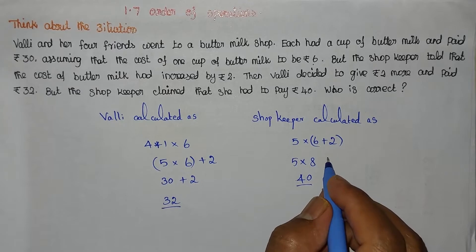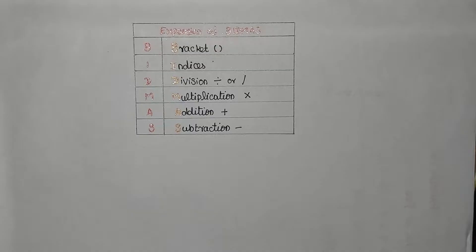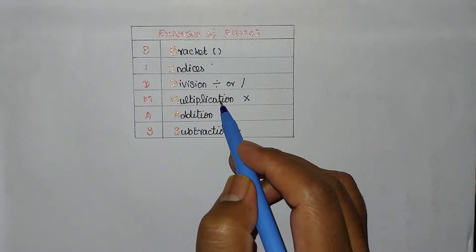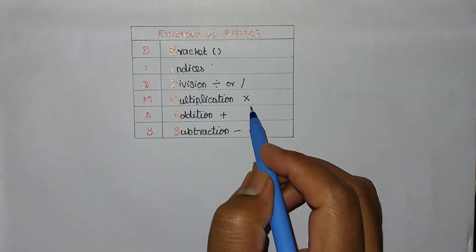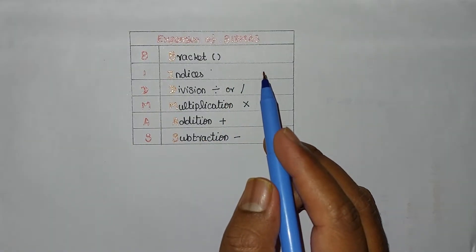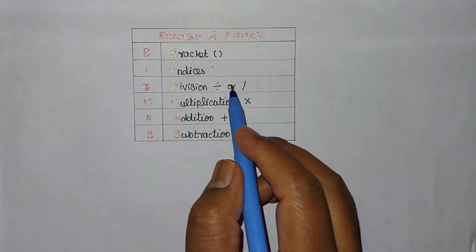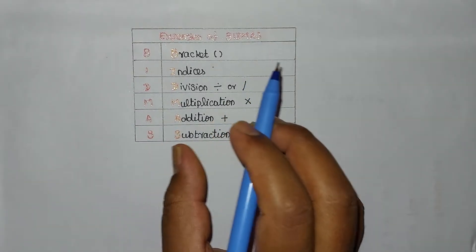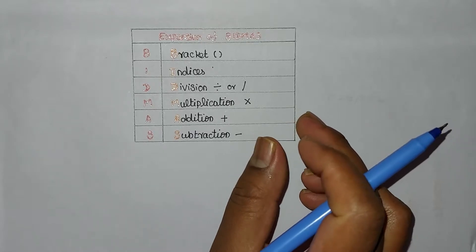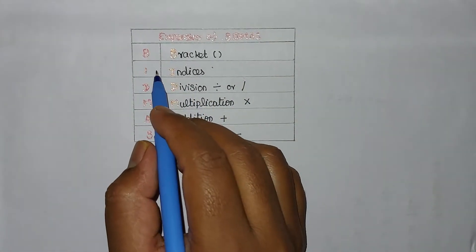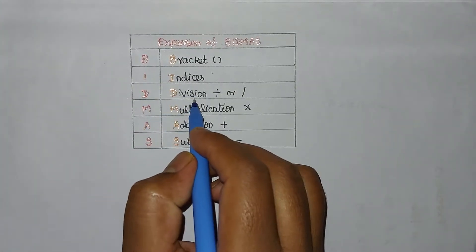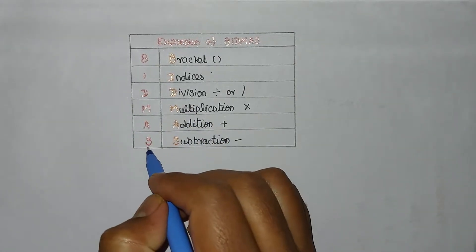The expression value will vary depending on the bracket positions. In the last problem, the shopkeeper problem was due to brackets, and the confusion arose from that real-time situation. The rule we use is called BODMAS — B for Brackets, O for Order, D for Division, M for Multiplication, A for Addition, S for Subtraction.